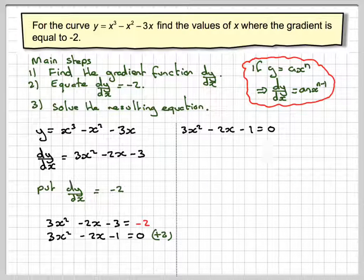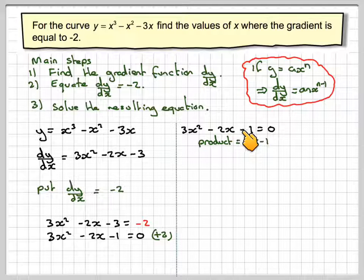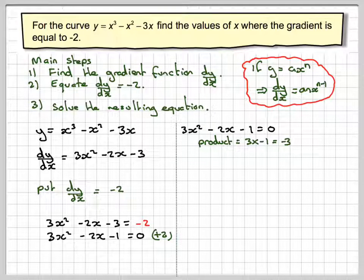So solving this quadratic, you can try to factorise it or use the formula. It does actually factorise. If we do the product sum factors method, the product is the first term, 3 times minus 1, which gives you minus 3. And the sum is the middle term, which is minus 2.